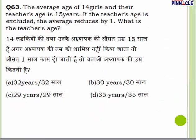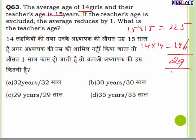Question number 63: the average age of 14 girls and their teacher is 15 years, so total 15 persons, total age = 15×15 = 225. If the teacher's age is excluded, average drops by 1, so 14 girls' average = 14, total = 14×14 = 196. Teacher's age = 225 − 196 = 29.